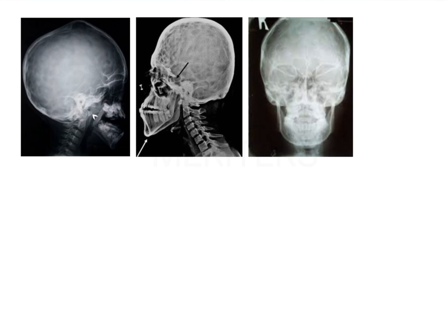As you can see here, there is this specific kind of appearance. So if you take a metal sheet and beat it or hammer it here and there, this is the kind of appearance that you get in the skull radiograph. These are the characteristic findings of Crouzon syndrome.